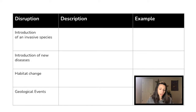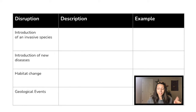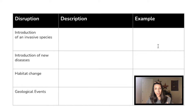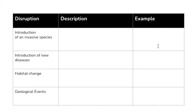So on this chart here, I have a disruption listed. I want you to fill out the description and then an example of each. Go ahead and either do this on your own paper or you can use the slides that I've linked in the description of this video. Take a moment to pause, fill out the chart, and then come check it against what I have.